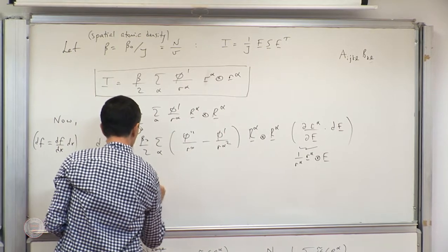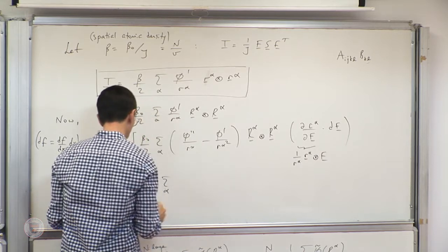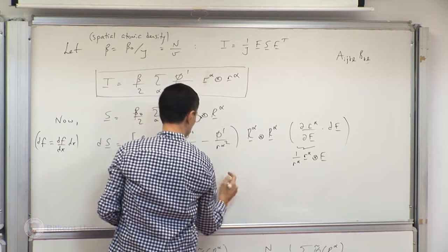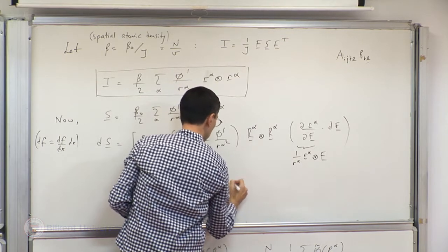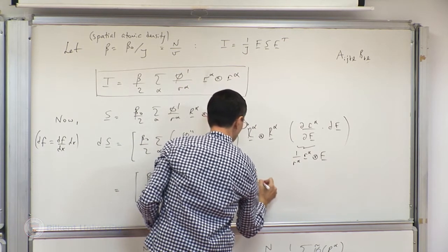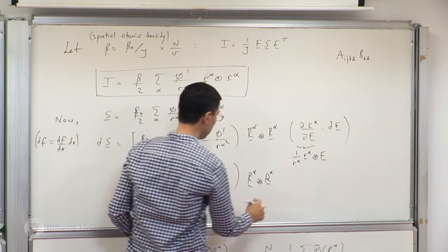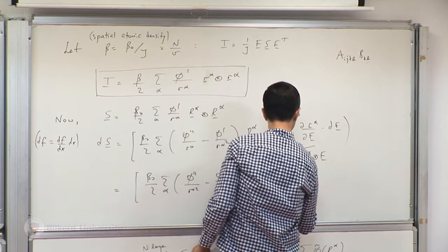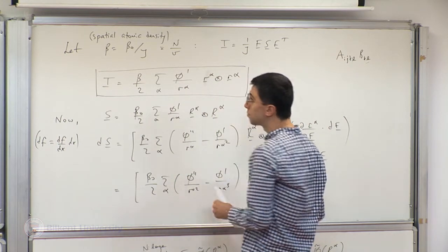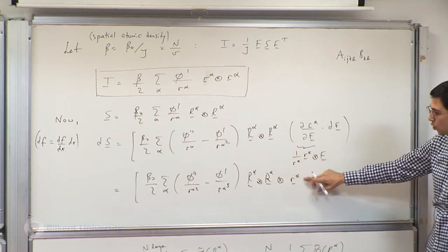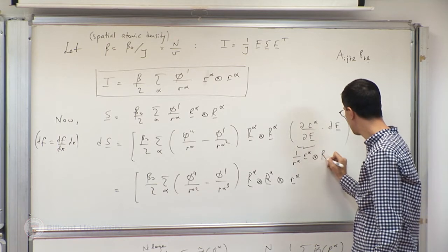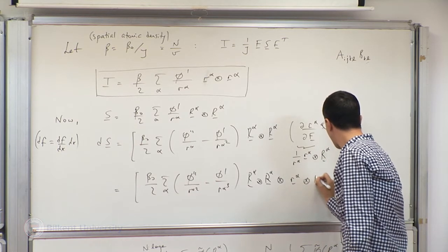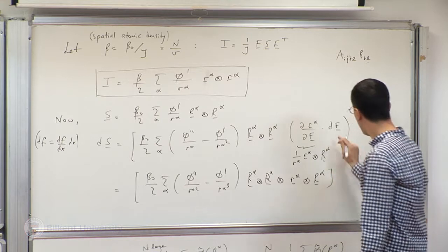That fourth-order tensor is beta-naught over 2 times the sum over alpha of [phi-double-prime over r_alpha-squared minus phi-prime over r_alpha-cubed] times capital R_alpha otimes capital R_alpha otimes capital R_alpha otimes capital R_alpha, operating on dF. (A correction was made: it should be capital R_alpha operating on dF, not F.)